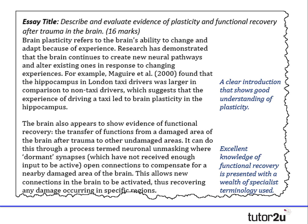We're now going to talk about the functional recovery aspect. The brain also appears to show evidence of functional recovery, which is the transfer of functions from a damaged area of the brain after trauma to other undamaged areas. It can do this through a process termed neuronal unmasking, which is when dormant synapses open connections to compensate for nearby damaged areas of the brain. This allows connections in the brain to become activated, thus recovering any damage occurring in specific regions. That's a nice outline written in around 120 to 150 words, including definitions and elaboration.